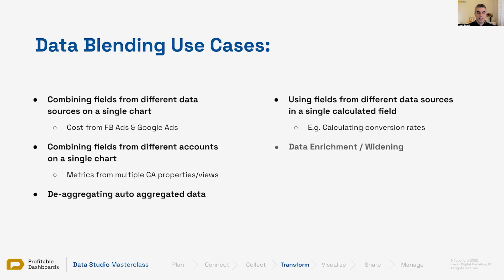We can also do data enrichment and data widening. For example, we want to look up the profit margin for each of the SKUs on an e-commerce system. This is something the client might have in a spreadsheet, but they don't have it in Google Analytics or Google Ads or whatever tool they're using for marketing, analytics, and reporting. We can bring that external data — that additional data point — and enrich the data we have. This is one way of enrichment or data widening.